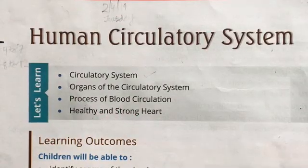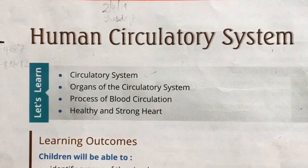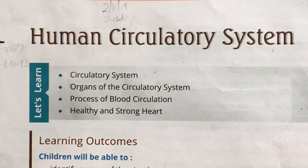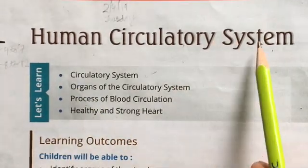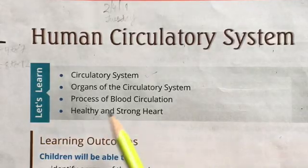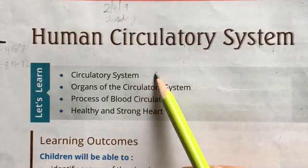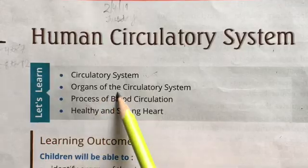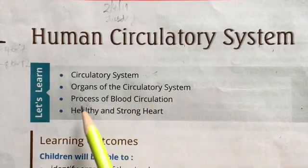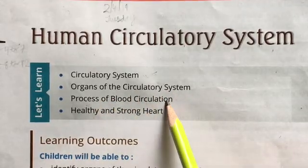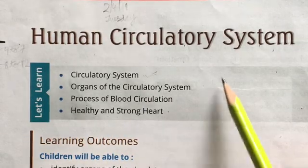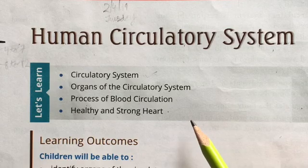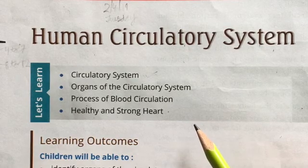Hello students, today we are going to start Class 5 Science, in which I am going to take up the first chapter which is the human circulatory system. In this video I will cover: what is the circulatory system, organs of the circulatory system, process of blood circulation, and healthy and strong heart. These are the four subtopics that we are going to include in this video.